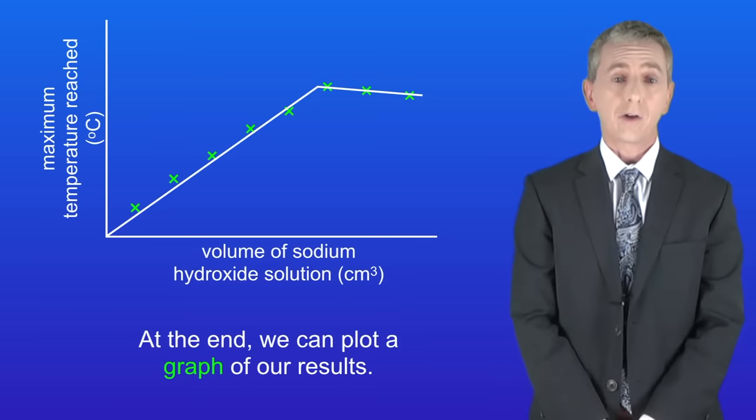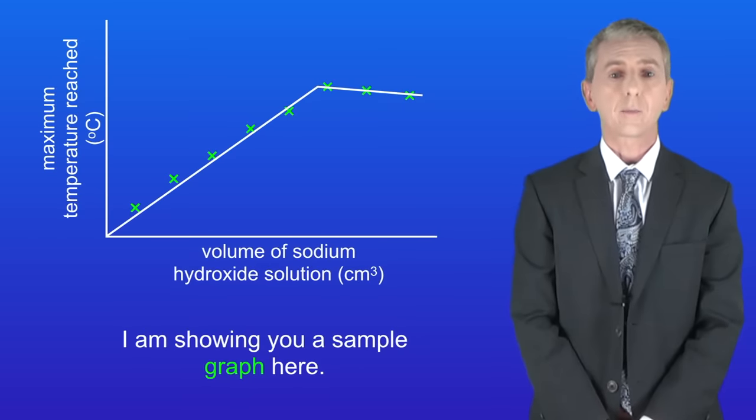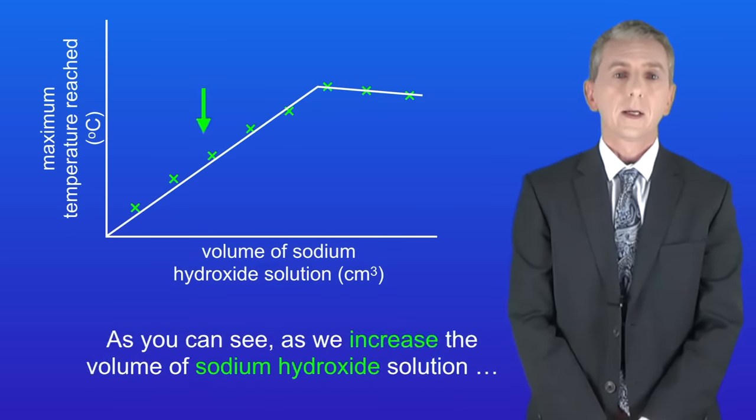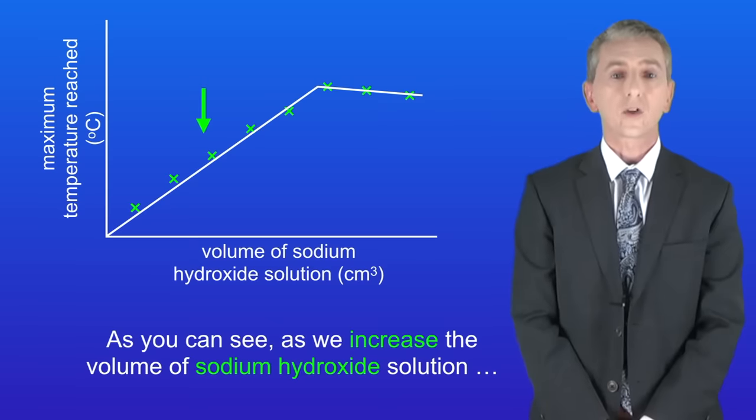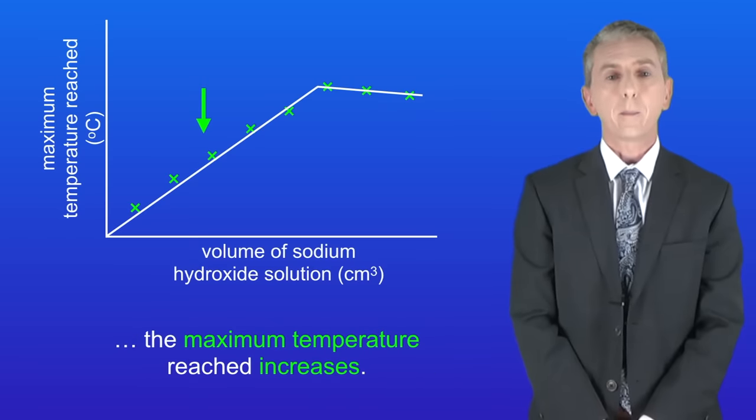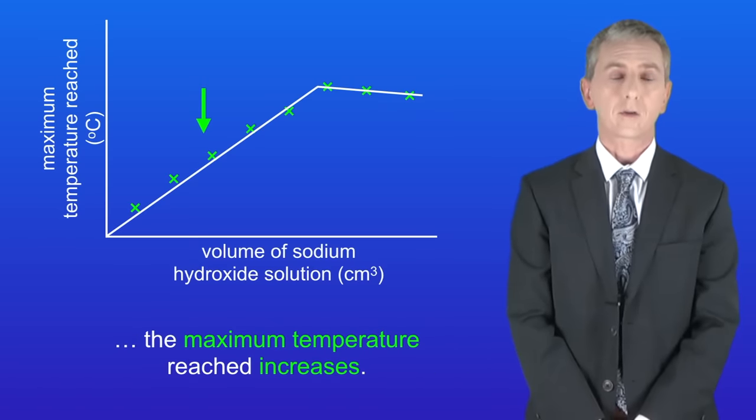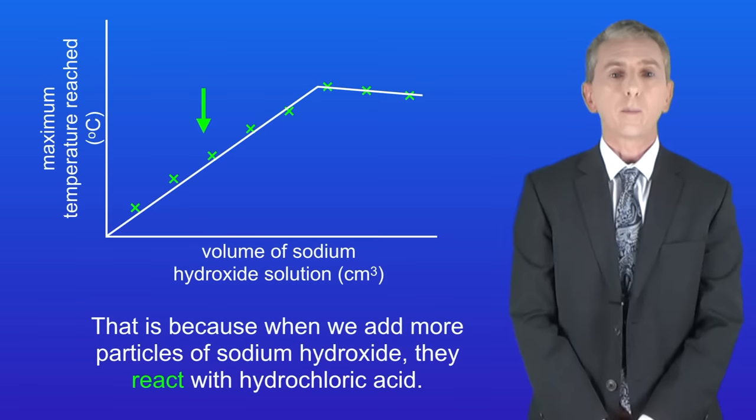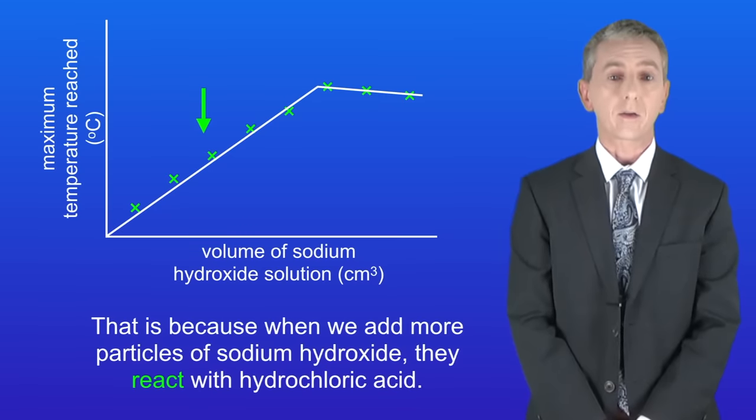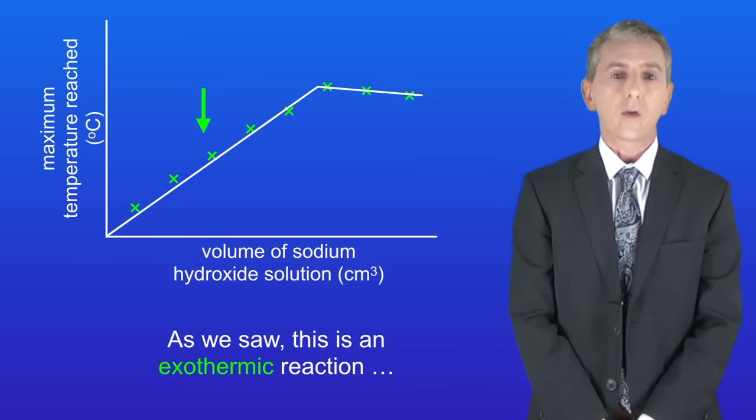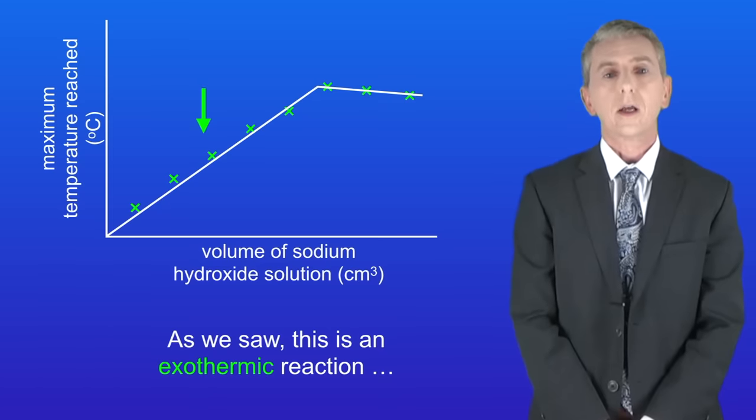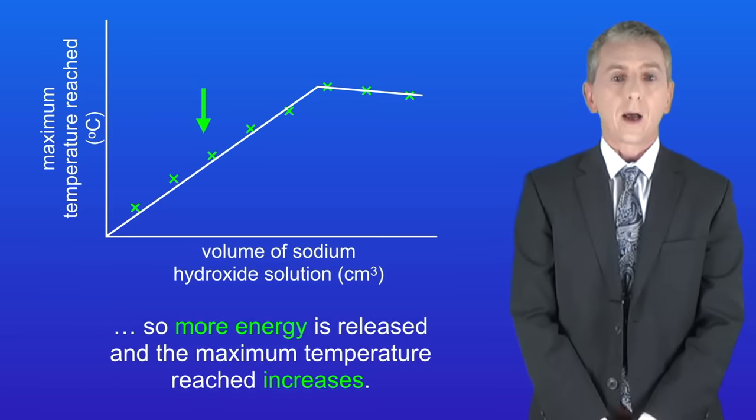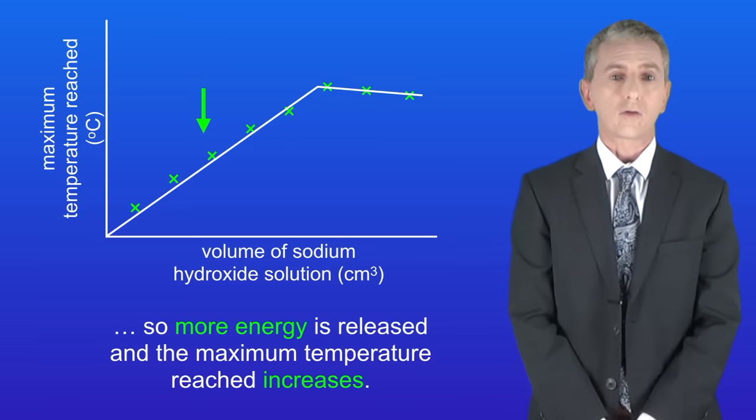At the end we can plot a graph of our results and I'm showing you a sample graph here. As you can see as we increase the volume of sodium hydroxide solution the maximum temperature reached increases. That's because when we add more particles of sodium hydroxide they react with hydrochloric acid. As we saw this is an exothermic reaction so more energy is released and the maximum temperature reached increases.